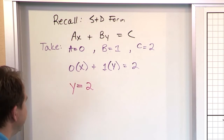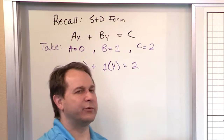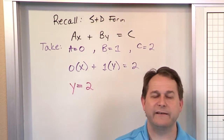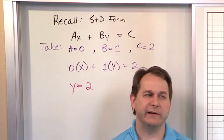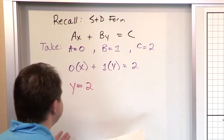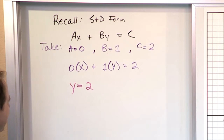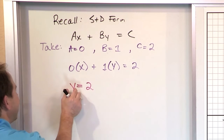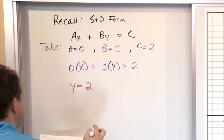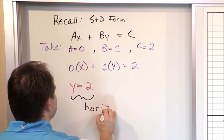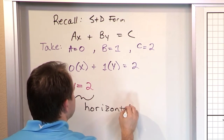Normally we would solve for y and get it in mx plus b form — we read the slope, we read the y-intercept, and we graph the line. But when you look at this equation y equals two, it doesn't look anything like that. When you have an equation of a line that has y equals a number, this is a horizontal line.